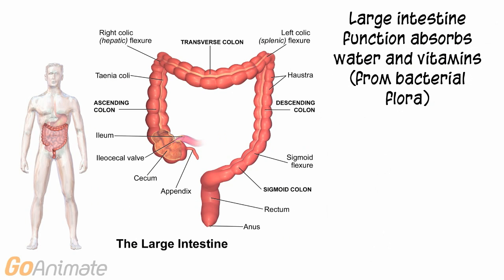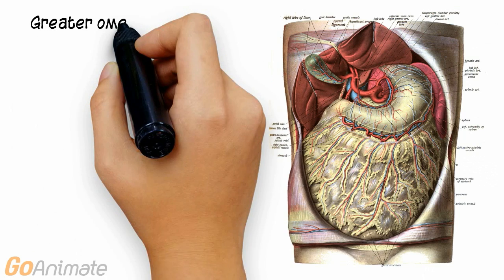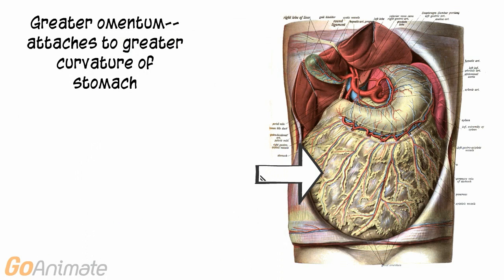The function of the large intestine includes absorbing water and vitamins from bacterial flora. Feces exits the large intestine when it reaches the rectum and triggers the defecation reflex. The greater omentum is a large peritoneal membrane in the abdominal region. It attaches to the greater curvature of the stomach and is a site of fat storage, immunity, and helps to fight off infections.